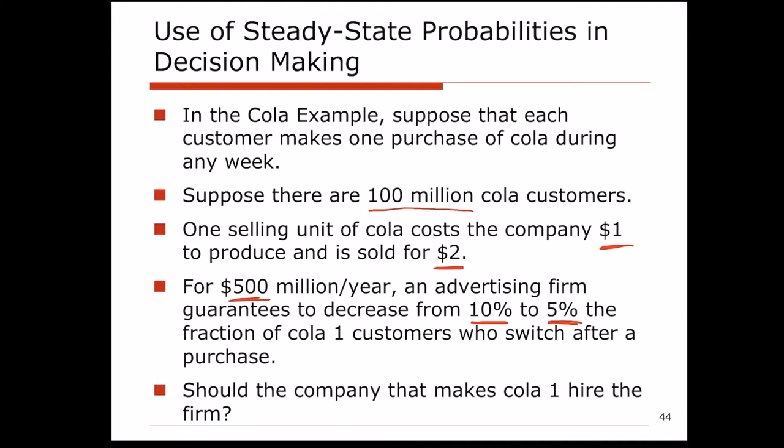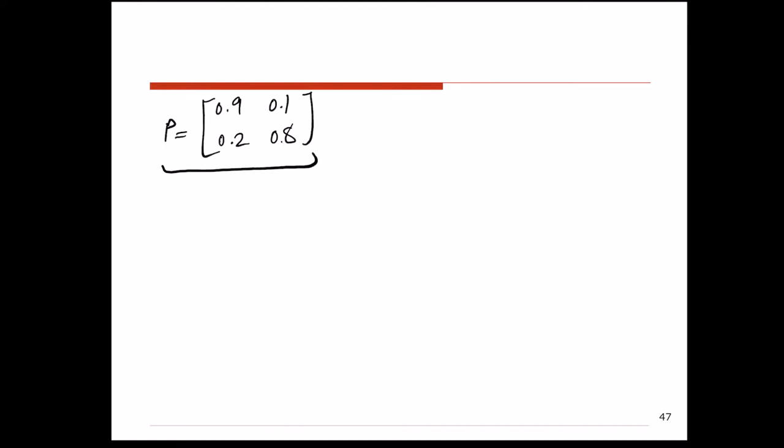Let's look at the problem again. In the previous scenario, the one-step transition probability matrix was as shown, and the steady-state probabilities we calculated were 0.67 for cola 1 and 0.33 for cola 2.